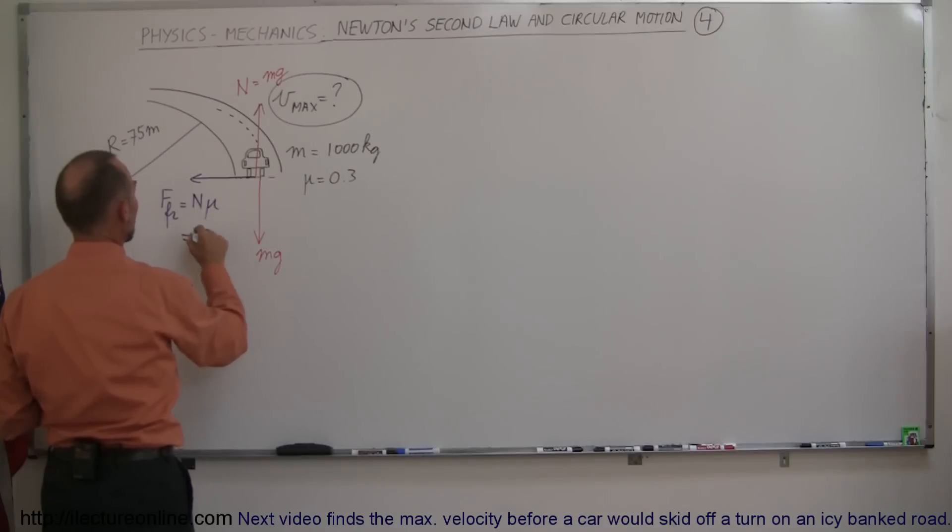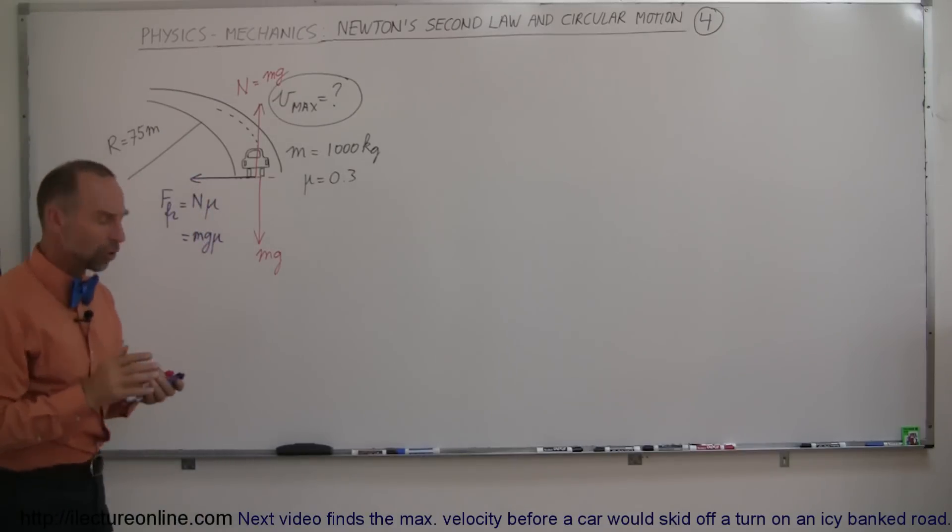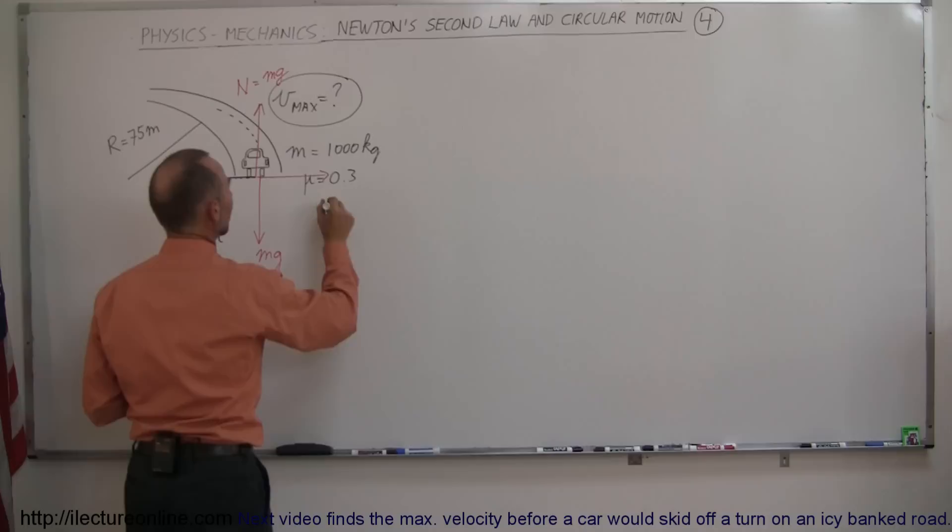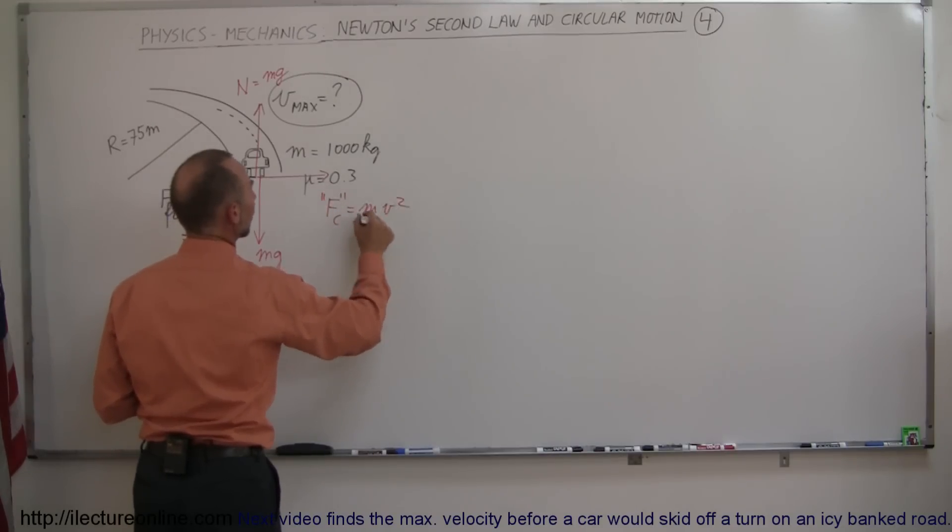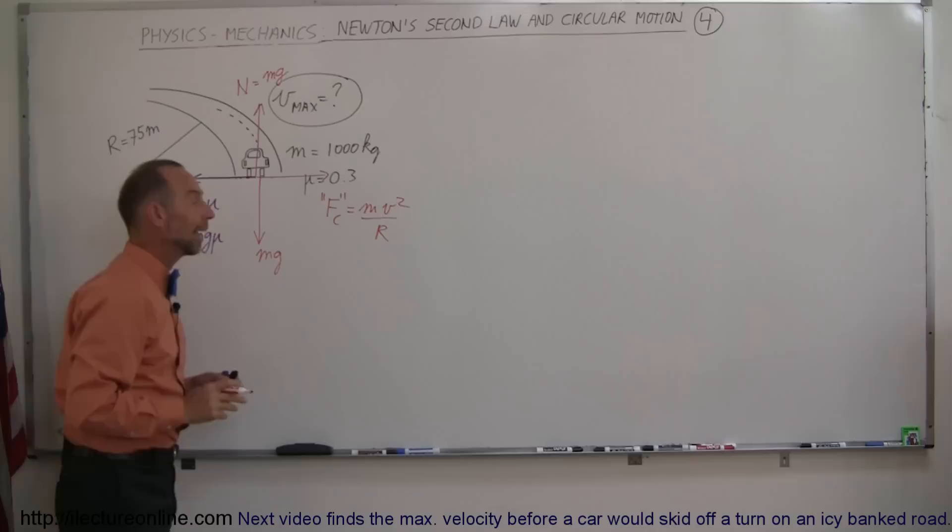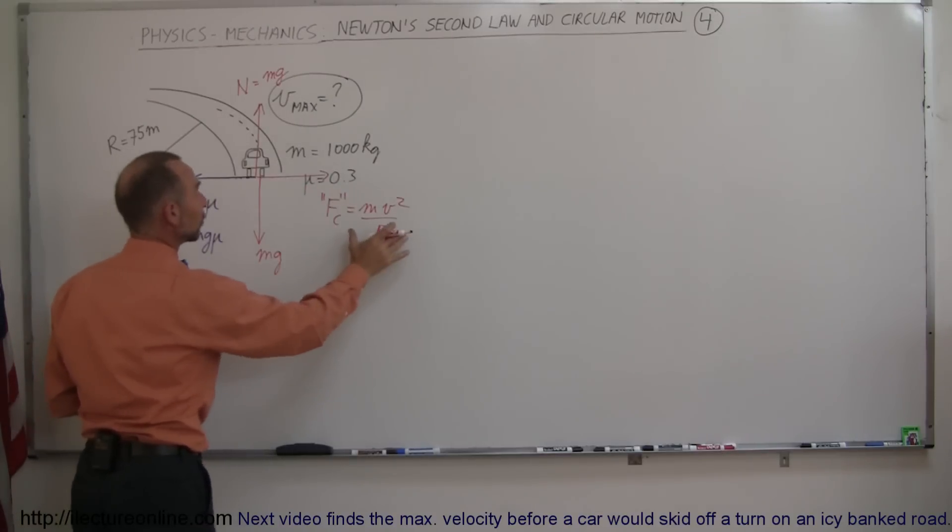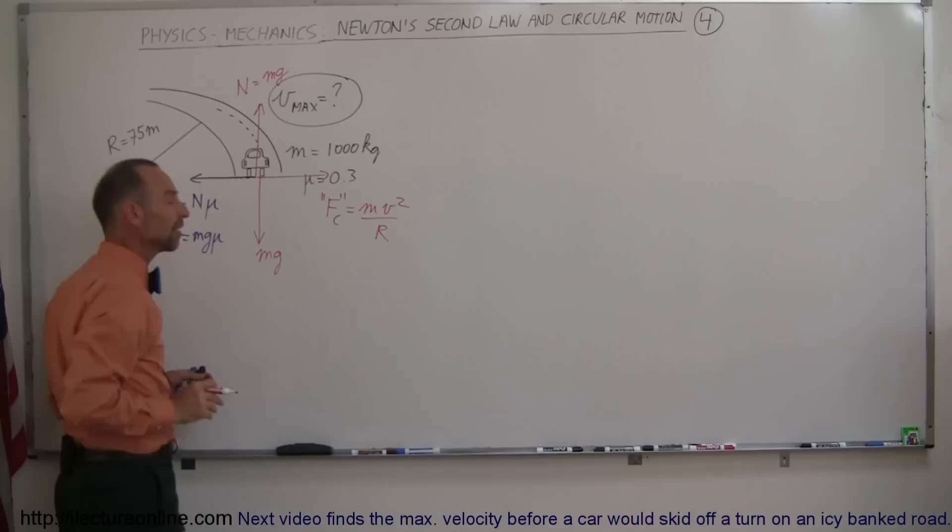What would be pulling the car off the road? It would be that fictitious centrifugal force, which would push the car to the outside. We call that the fictitious centrifugal force, which is equal to mv squared over r. If this is bigger than this, the car will go off the road. If this is smaller, the car will stay on the road.